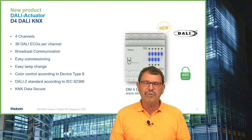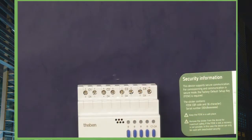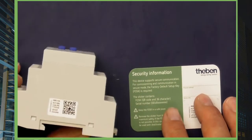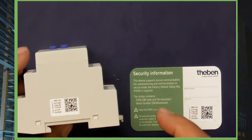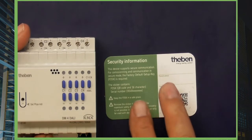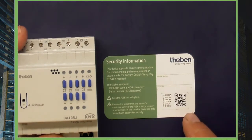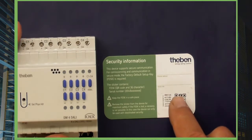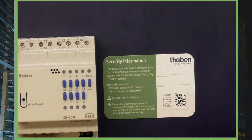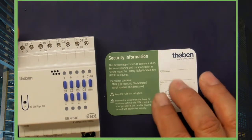This product supports DATA SECURE. All our new TABEN products support DATA SECURE. On the appliance you'll find a badge with the FTSK code, and in the packaging there is a security card which is a copy of that FTSK code. You need this FTSK code and QR code to operate the product in DATA SECURE communication. You can also type in the physical address, location, and product type of the device.